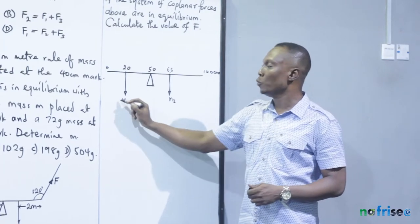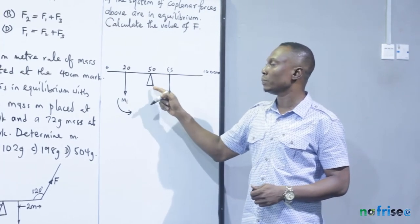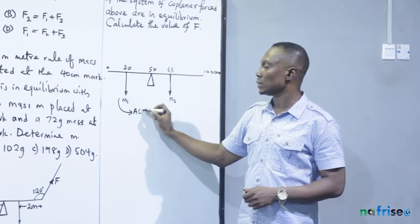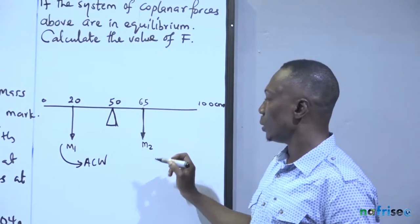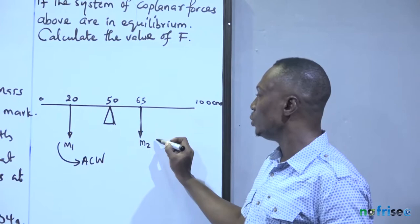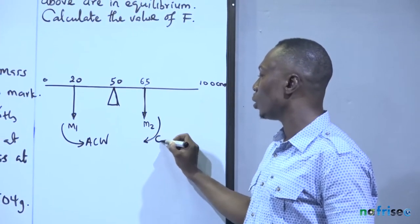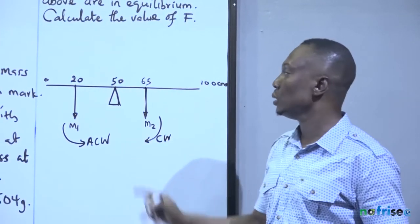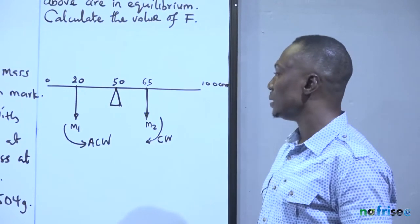We look at M1—what kind of moment does it describe about this pivot? It's anticlockwise, while M2 would describe a clockwise moment about the pivot. Let's quickly add the moment itself.